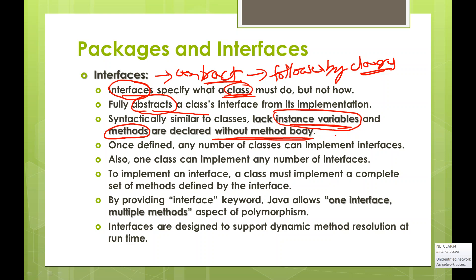We just mention the return type, the name of the method, the parameter list, and then terminate it with a semicolon. Once you define a particular interface, any number of classes can implement it. Also, one particular class can implement any number of interfaces.